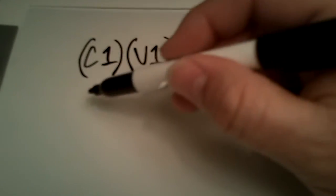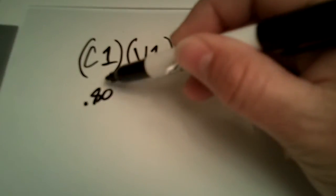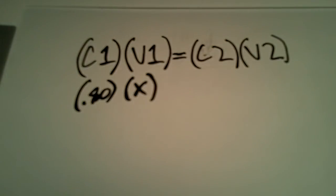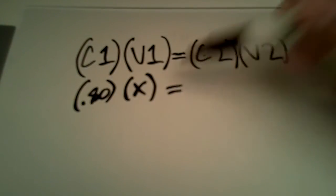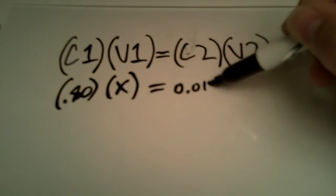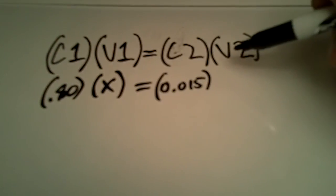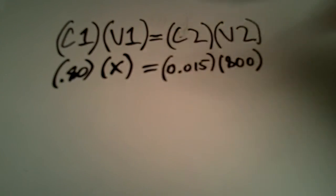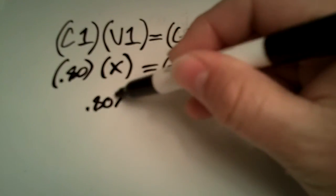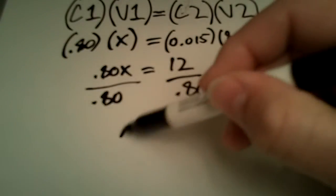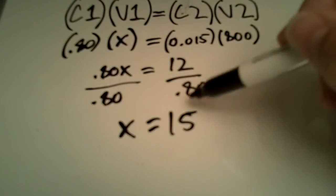So our C1 is our concentration one, which is 0.8. Our volume one is unknown, because that's what we're trying to find out — how many milliliters of the 80% solution we're going to use. Our concentration two is our 1.5%, which in this case is 0.015. And our volume two is going to be 800 milliliters. So we'll go ahead and do the math: 0.80x equals 12. In order to isolate x, we divide both sides by 0.80.